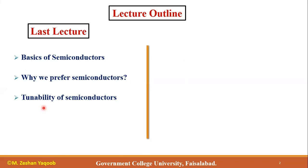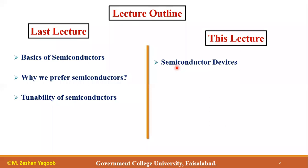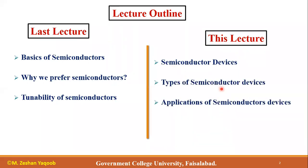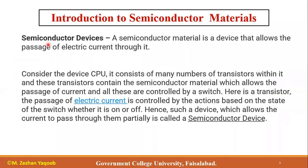Today, we will talk about semiconductor devices — the electronic devices in which we use semiconductor material. We can say that a semiconductor device is a device that allows the passage of electric current through it. A semiconductor material which allows electric current to flow through it is called a semiconductor device.